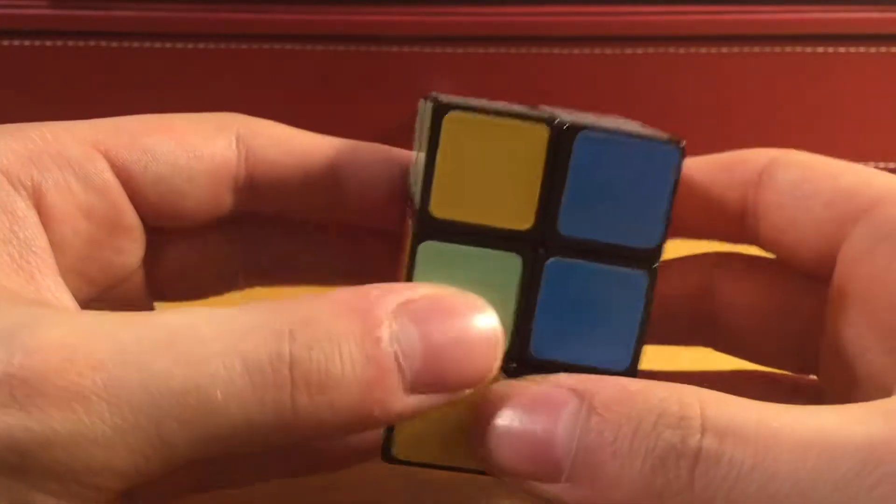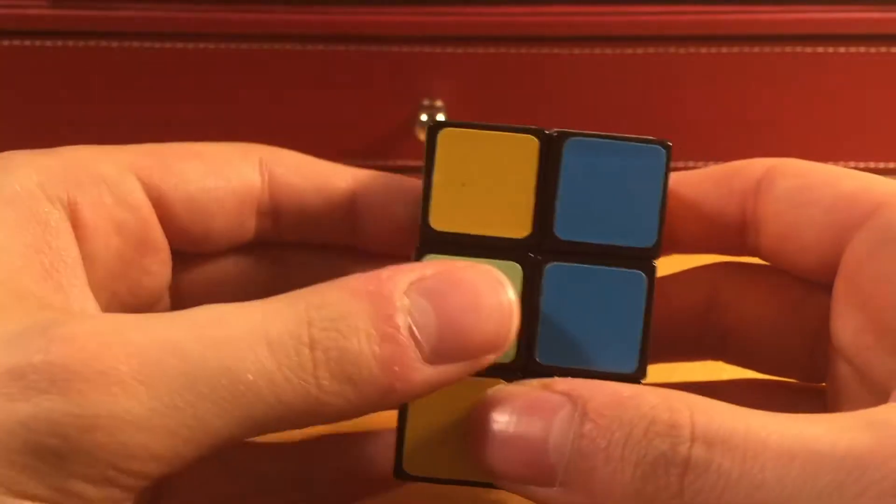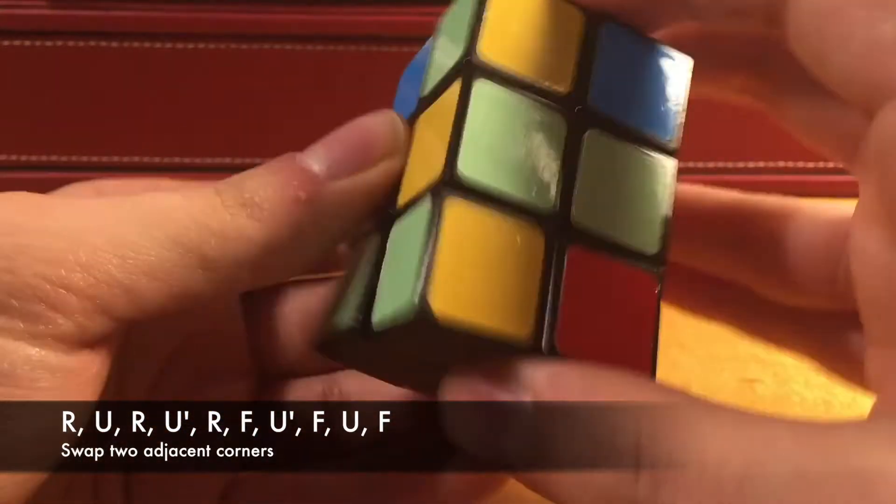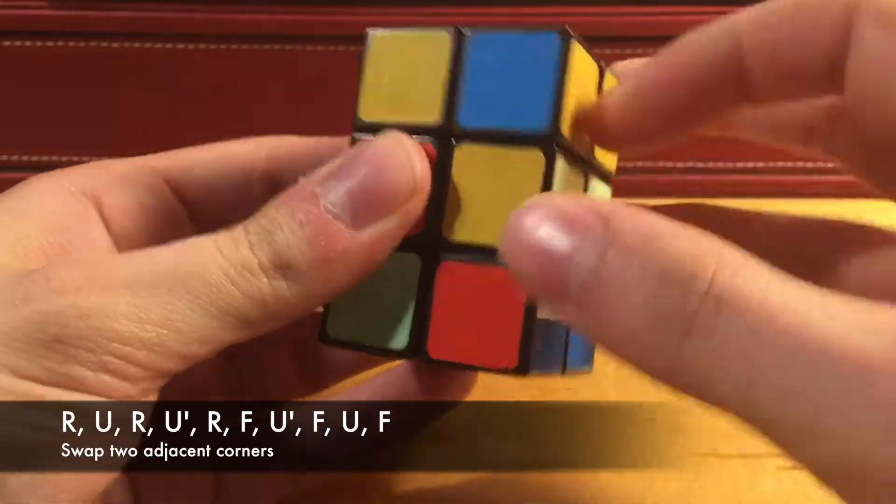So, this is that second state. And basically, it's the exact same algorithm. Again, you just hold the bar to the left, and you do R U R U' R F U' F U F.